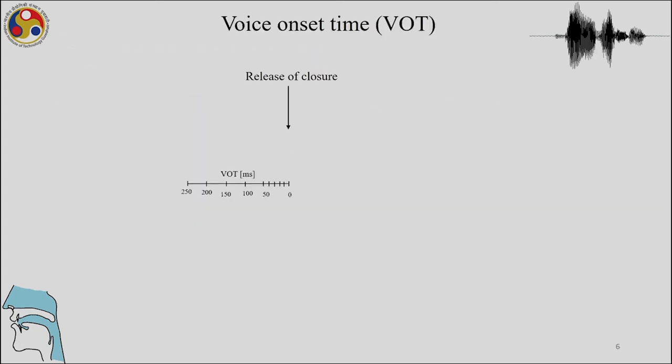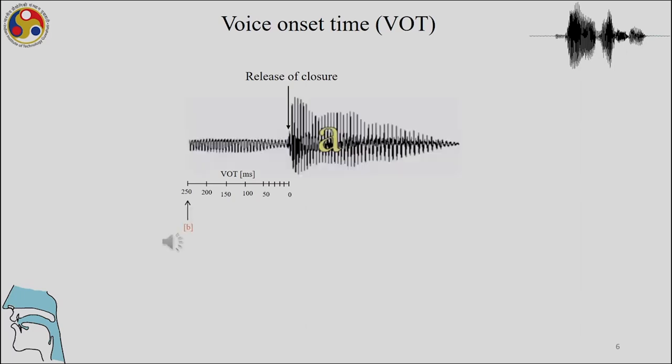Here we are showing VOT — release of closure of the consonant and when voicing starts. Depending on when voicing starts, you will hear a consonant as voiced or voiceless. In the last class we saw that between 20 and 25 milliseconds there could be a category change, and experimental results show that almost 100% of subjects gave a positive response difference within that category boundary, never hearing an in-between category — only one category or the other.